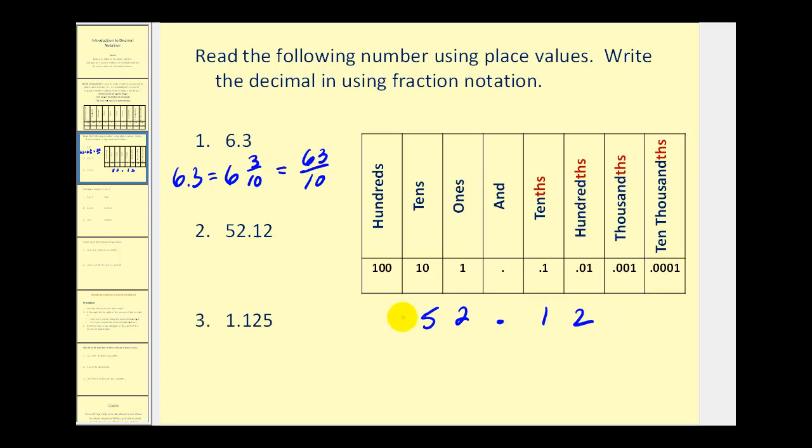For number 2, we would have 52 and 12 hundredths. And if we convert this to an improper fraction, 100 times 52, that would be 5,200 plus 12. So 5,212 over 1,000. Now this does simplify, but we're going to leave it in this form because it does show the place value. And this is often called a decimal fraction.